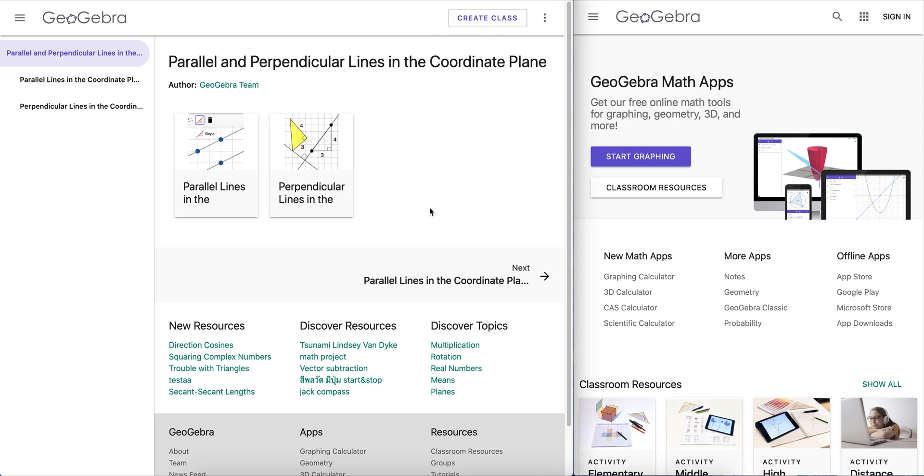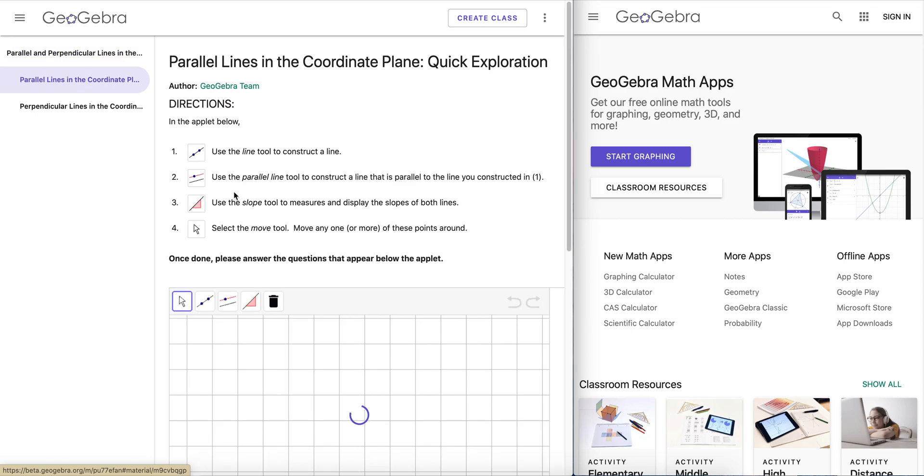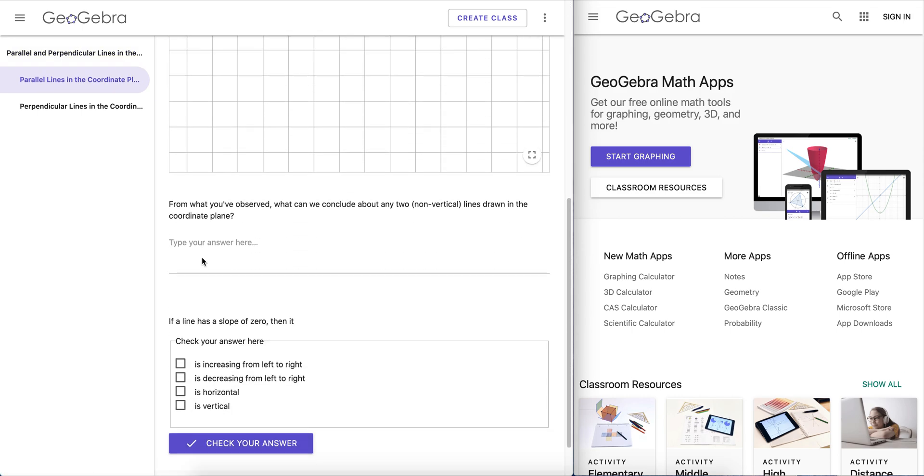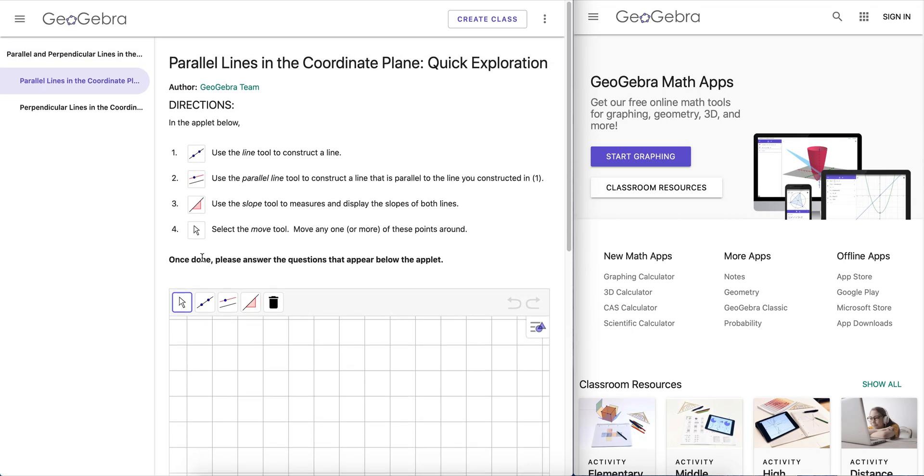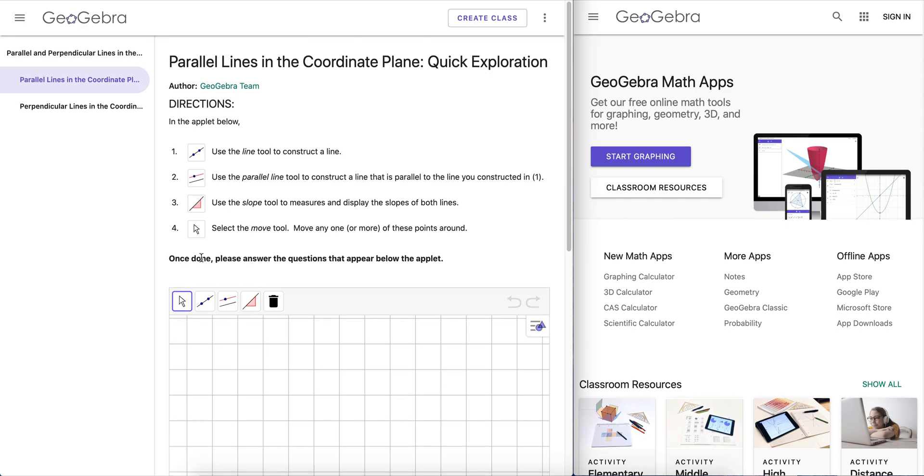In this sample GeoGebra book on the left, we have two activities. The first activity contains one applet and two questions, hence in GeoGebra Classroom that will become three student tasks.